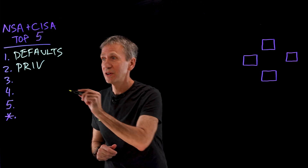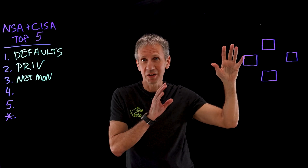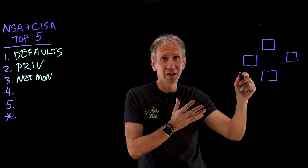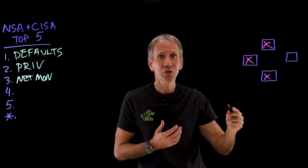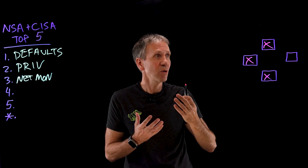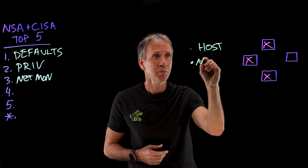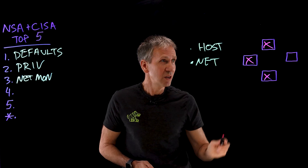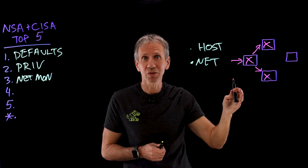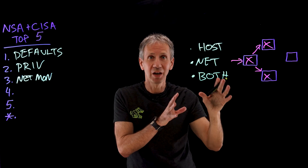Number three on the list is insufficient network monitoring, specifically referring to the internal environment. In a simple network of four systems, host monitoring tells you which hosts have been infected, but not how it got infected, where it entered, or where it will spread. Network-based monitoring does the reverse — it tells you where the malware entered and spread, but not all the implications on each system. What you really need in the best case is both: monitor the host and the network to get a complete picture. You can't secure what you can't see, so visibility is incredibly important.